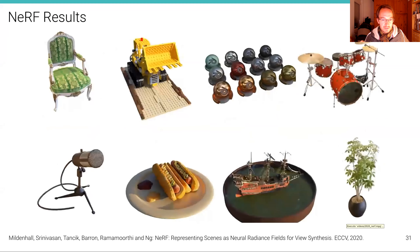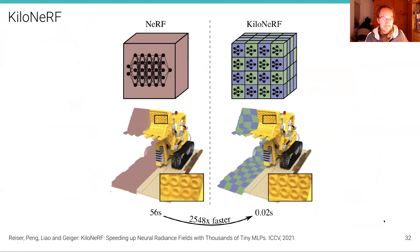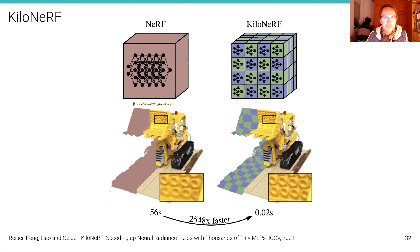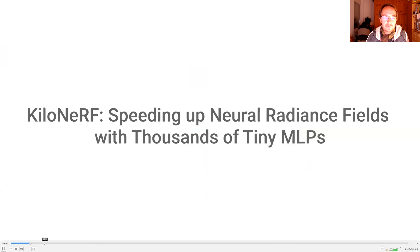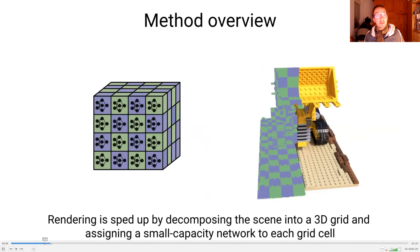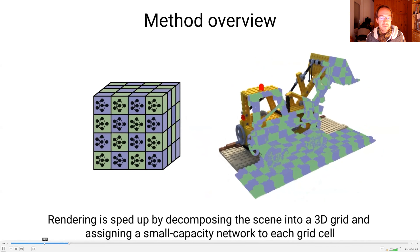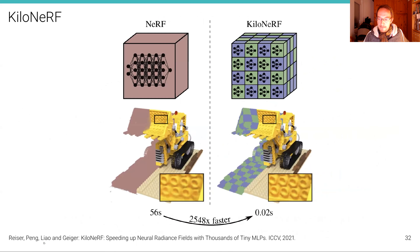One problem with this model is that it's very slow to train — typically a couple of hours, sometimes even days. It's also very slow to render novel views, which is a problem for AR or VR applications. We investigated one extension where we replace the single MLP that represents the entire scene with thousands of very small MLPs. Surprisingly, they can reach the same image fidelity when rendering novel viewpoints, but at much faster speeds — real-time performance with what we call KiloNRF. This demonstrates that these models might soon become useful for computer graphics as a representation for rendering.